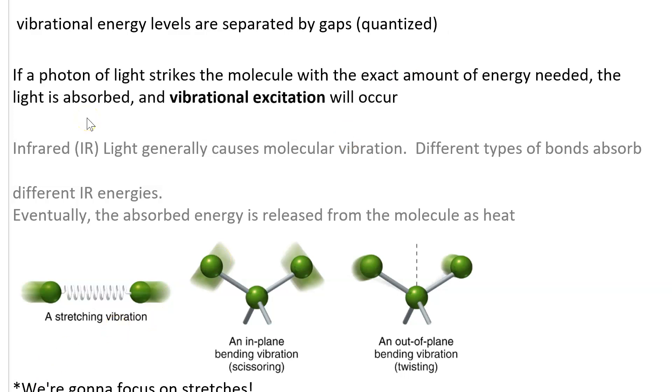If a photon strikes the molecule with the exact amount of energy needed to bridge that gap, the photon is absorbed and a vibrational excitation happens. That means different colors of photons can make the molecules vibrate in different ways.